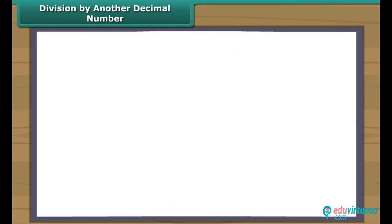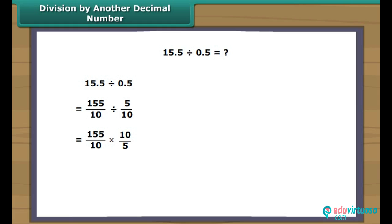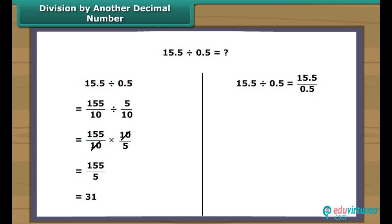Division by another decimal number. Let us learn the division of one decimal number by another. 15.5 can be written as 155/10. Similarly, 0.5 can be written as 5/10. We get 155/10 × 10/5. On simplifying, we get 155/5 = 31. We observe that the decimal place was shifted to the right in 15.5 to make it 155, so there was a shift of one decimal place to the right in 0.5 also to make it 5. Thus, 15.5 divided by 0.5 can be written as 155 divided by 5, which gives 31 as the answer.